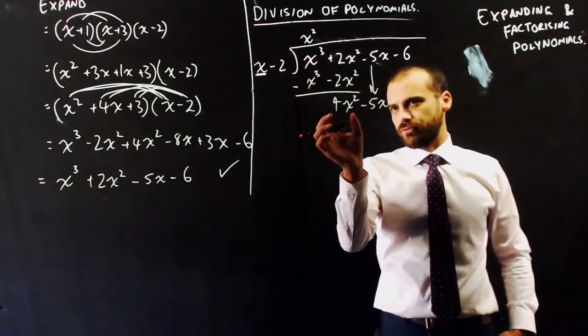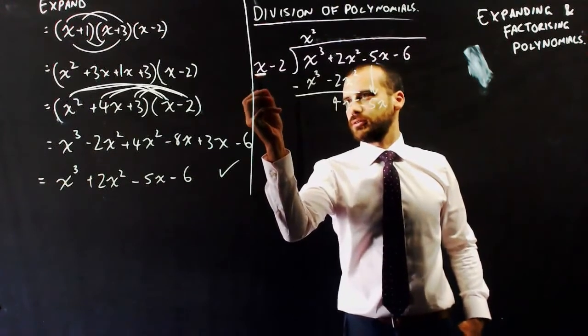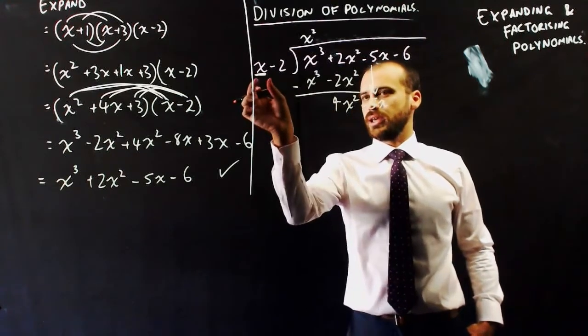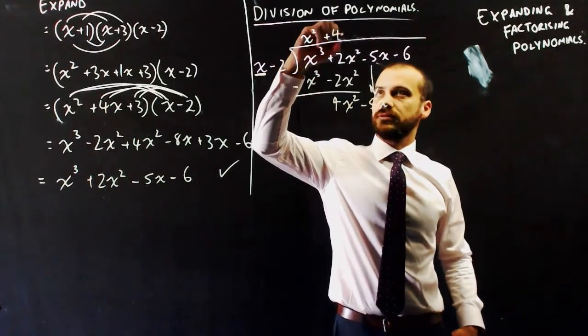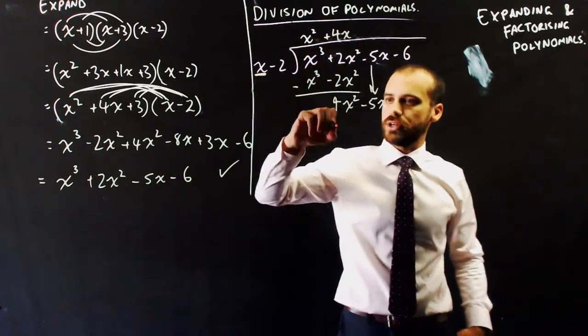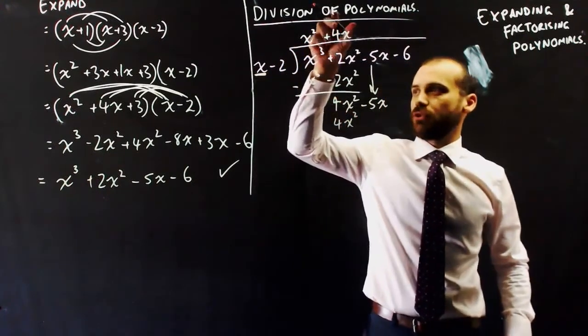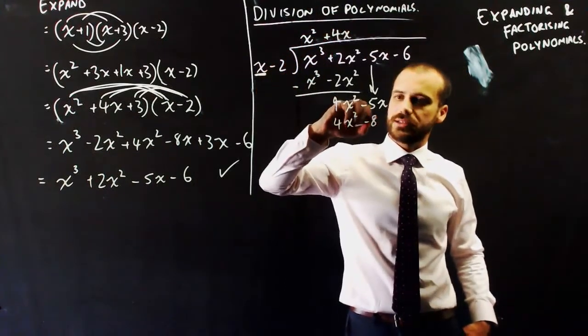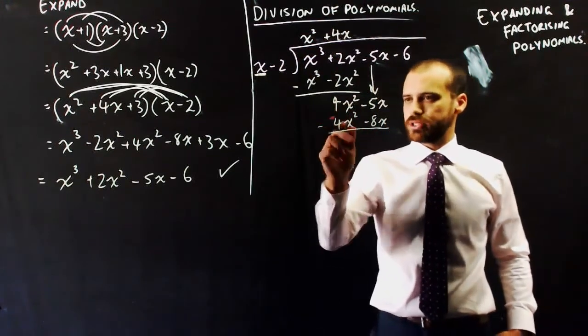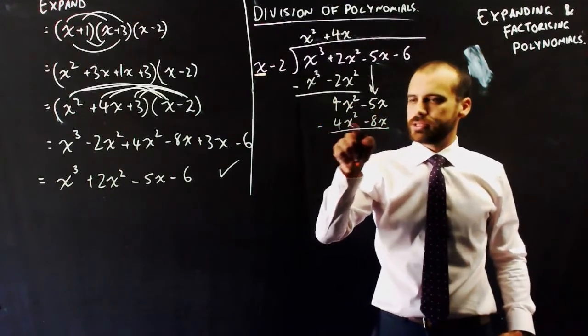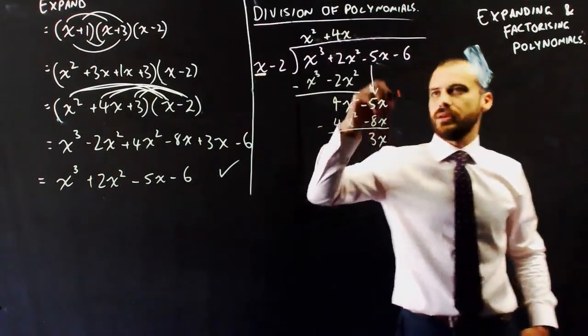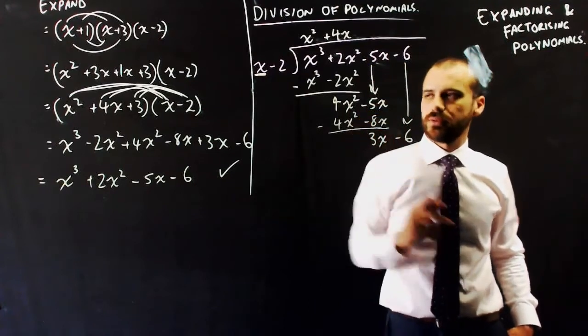Okay, now we have 4x squared minus 5x. And we're going to divide by x. So we're just going to do the 4x squared bit here. So 4x squared divided by x is 4x. And then 4x times all of this. So 4x times x is 4x squared. And 4x times negative 2 is negative 8x. Subtracting one from the other. 4x squared minus 4x squared is 0. Negative 5x minus minus 8x is negative 5x plus 8x, which is 3x. And we can bring this one down.